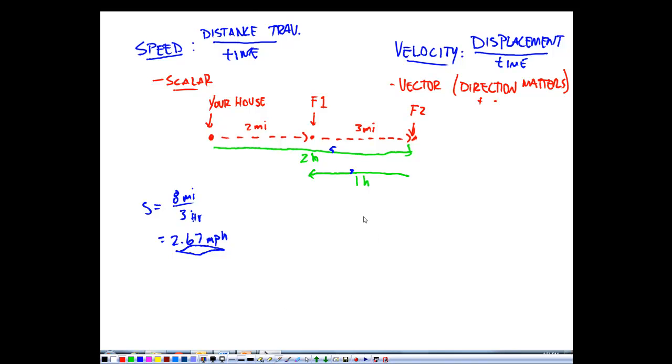For velocity, we're going to say it's our displacement, delta x, over time. Well, our displacement, we said, was positive 2 miles. Overall, we traveled positive 2 miles from here, right here, divided by a time, again, of 3 hours. So our velocity is going to be 0.67 miles per hour in the positive direction, this way, away from your house.